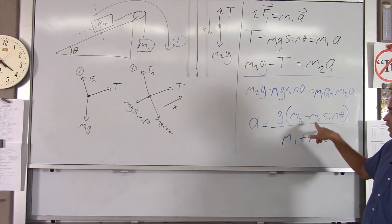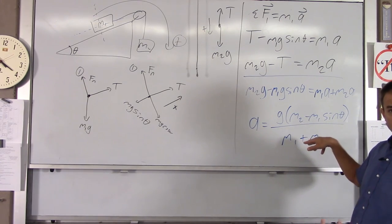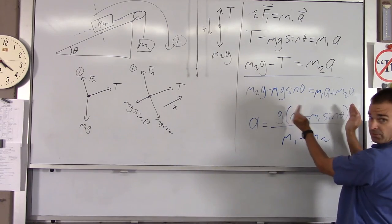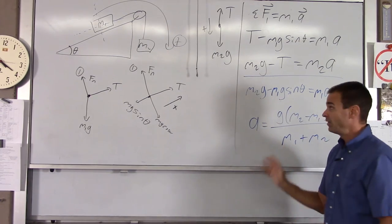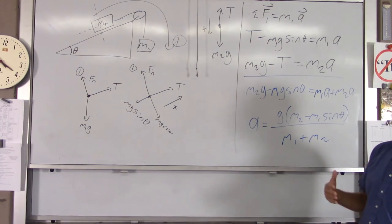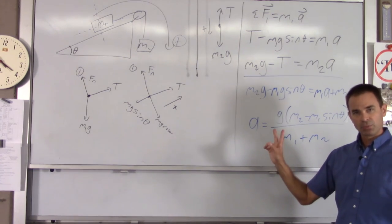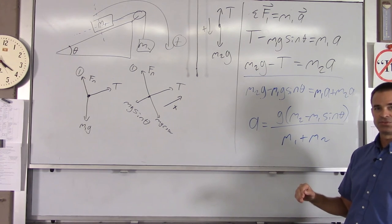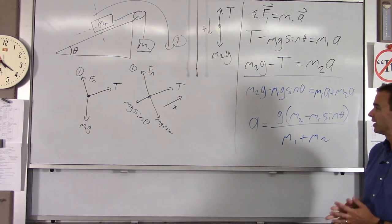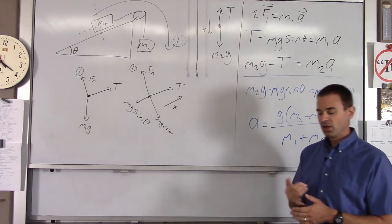A couple things to note. If you were to do the math, if I were to give you numbers for M1, M2, and theta, if this term were negative, all that would mean is we guessed wrong, and the acceleration is actually counterclockwise. The overall resistance to motion in this situation is just M1 plus M2. It's one way to look at that. So that's an example without numbers.